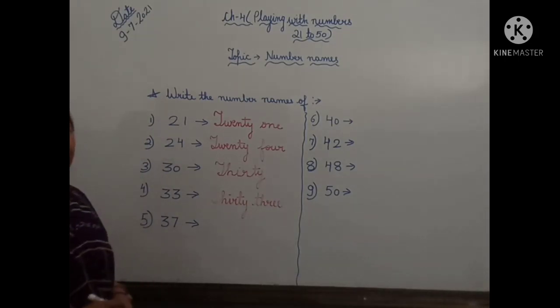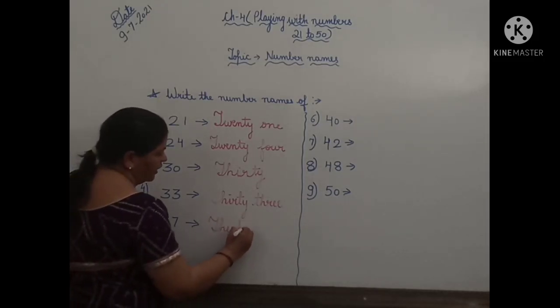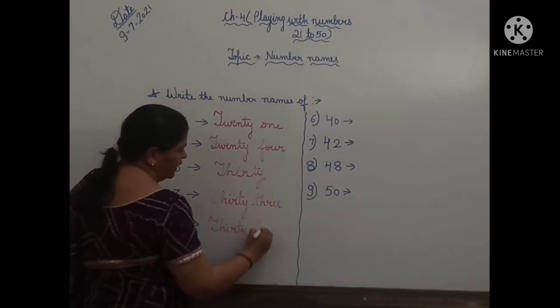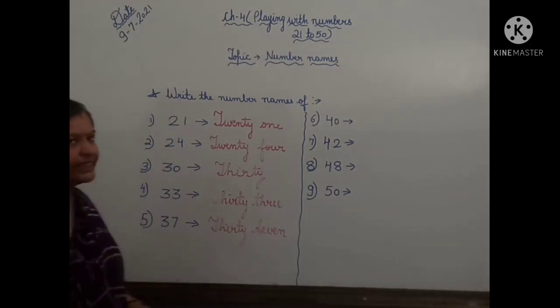Next number, 37. Again, T-H-I-R-T-Y, 30. S-E-V-E-N, 7. 37.